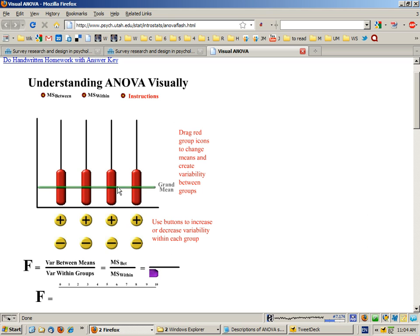If we drag this mean up we're starting now to introduce some between group variance and you can see that here relative to the within group variance which is the spread within the group. We only have a very small F value. If we drag this up here we're increasing the between group variance and now the F score is getting larger.